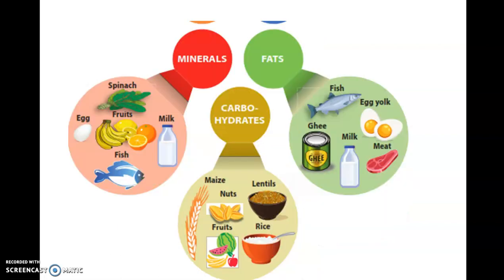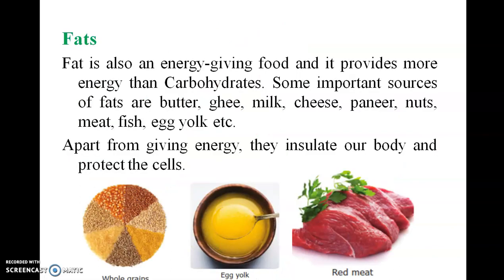Minerals come from vegetables, fish, milk, and eggs. Fat is obtained from fish, egg yolk, milk, and beet. Carbohydrates are found in nuts, fruits, rice, and lentils — all these together form a healthy nutrient combination. Fat is also an energy-giving food and provides more energy than carbohydrates. Important sources of fats include butter, milk, cheese, paneer, nuts, meat, fish, and egg yolk.